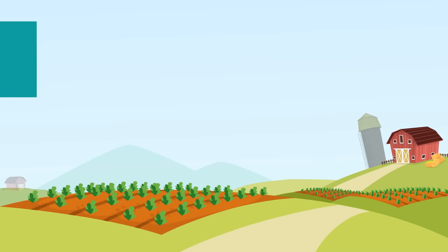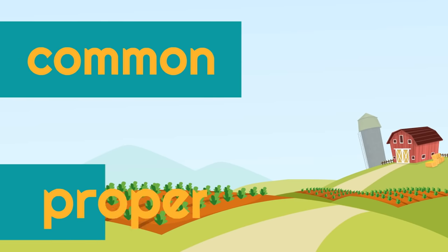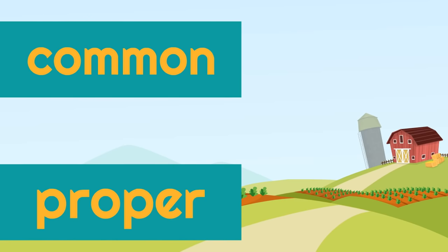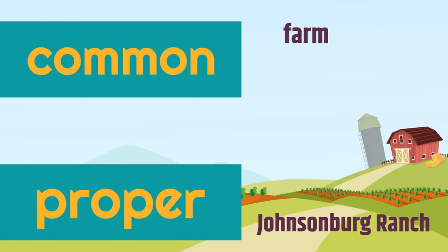Now let's look at two more examples. This is a picture of a farm. Farm is the common noun — notice it's got a lowercase letter. It's the type of thing that this is. The name of the farm is Johnsonburg Ranch, so that's the proper noun. It's the specific farm. Johnsonburg Ranch is capitalized because it's a proper noun — it's the specific thing that it is.